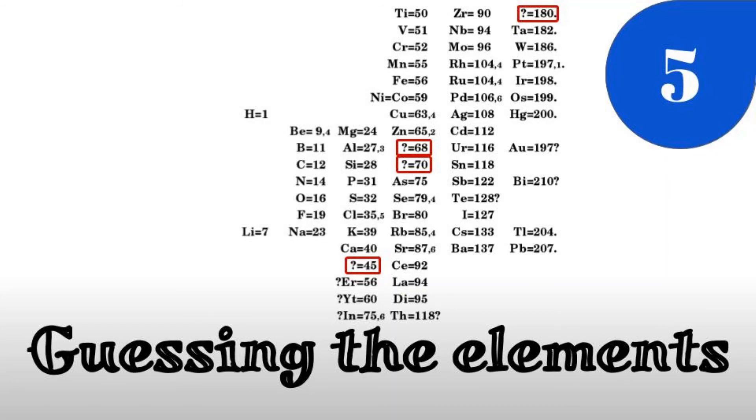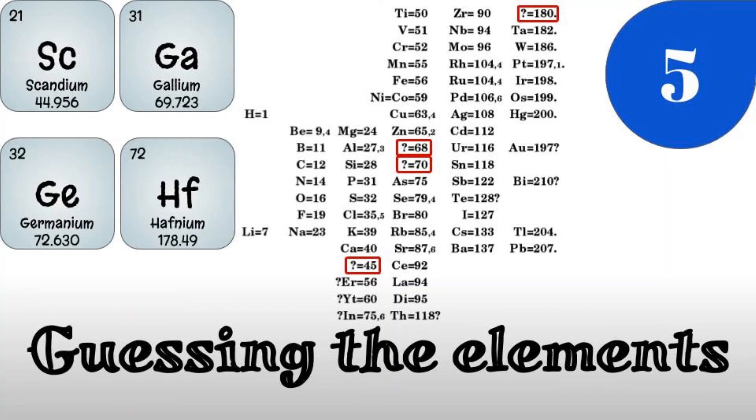These elements were scandium, gallium, germanium, and hafnium. As you can see, the atomic weight in the original table is very similar to the corresponding weights on the element card. This is one of the main reasons people in the scientific community accepted Mendeleev's periodic table.